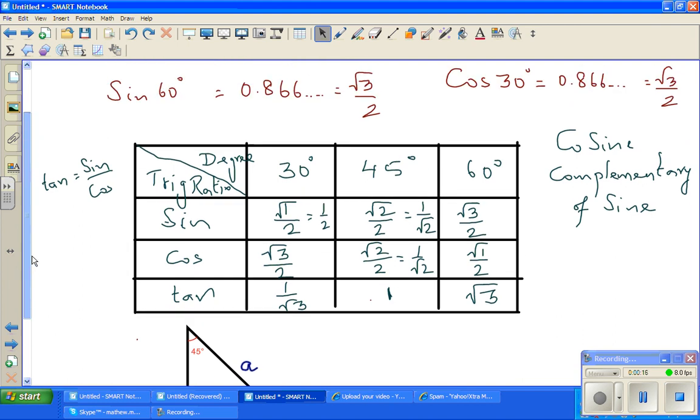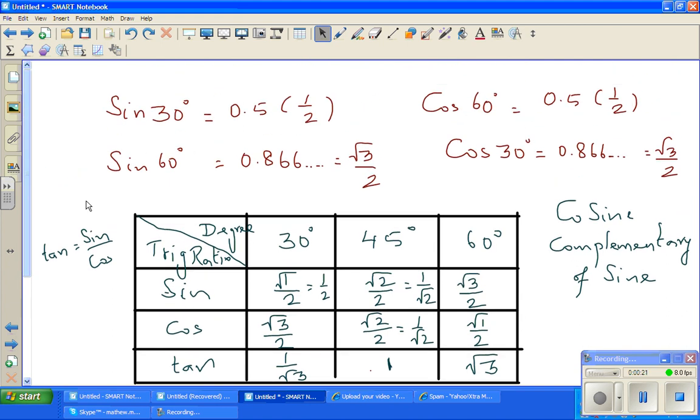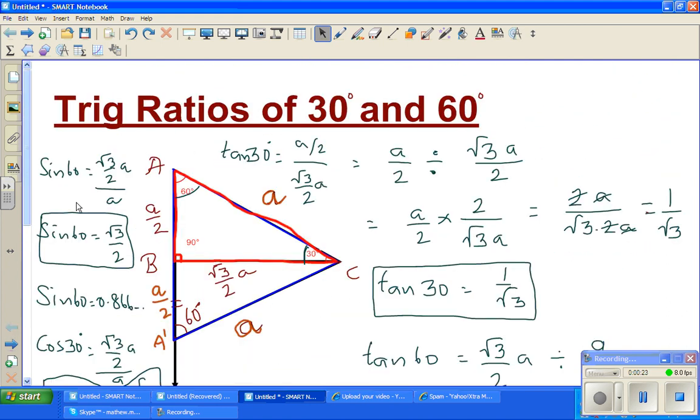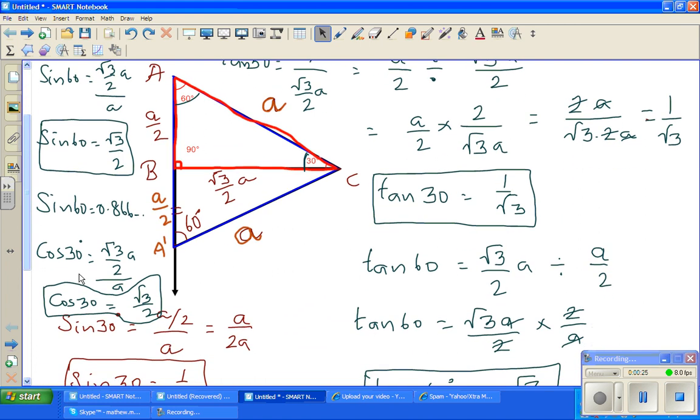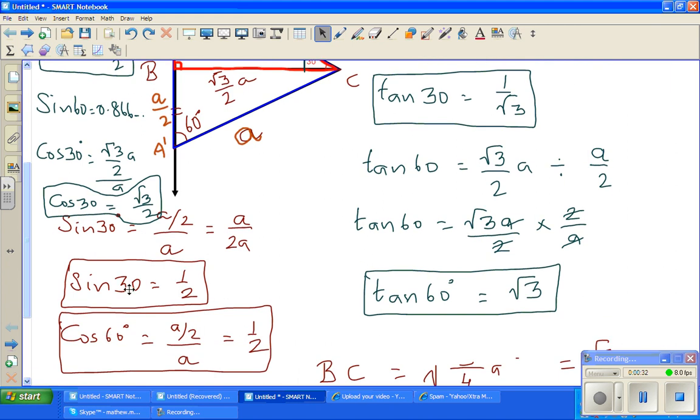This is where we finished. We proved that sine 30 is half. So sine 30 - this was in the previous page - sine 30 is half. When we say that cos 60 is also half, they're complementary. 30 and 60 are complementary.